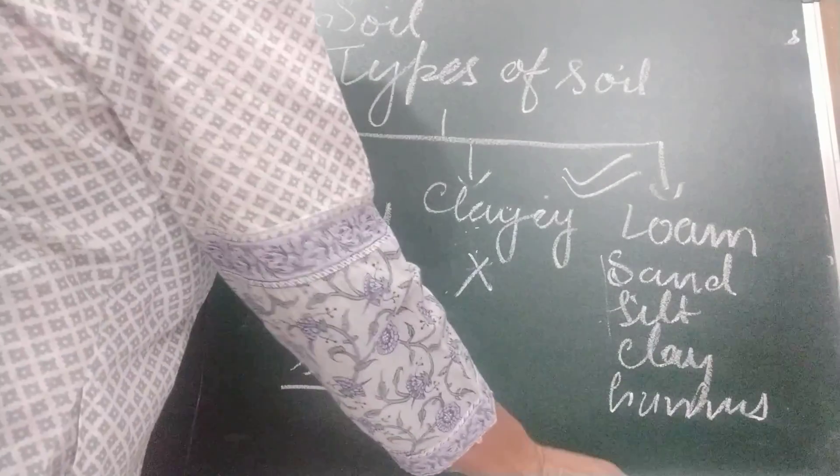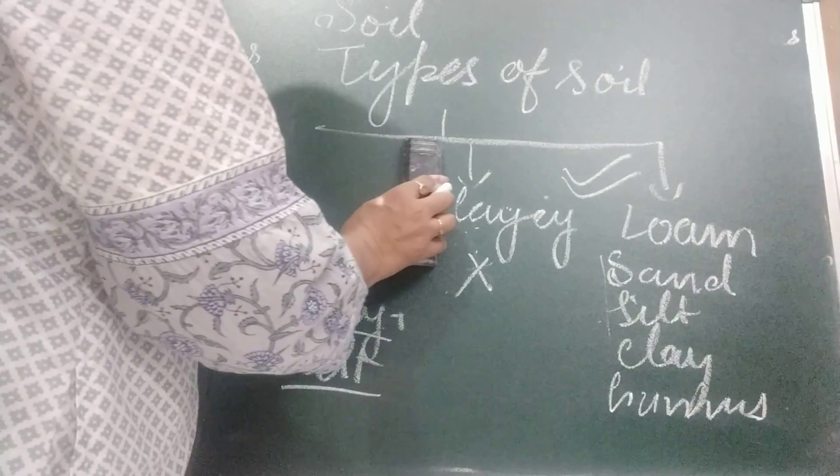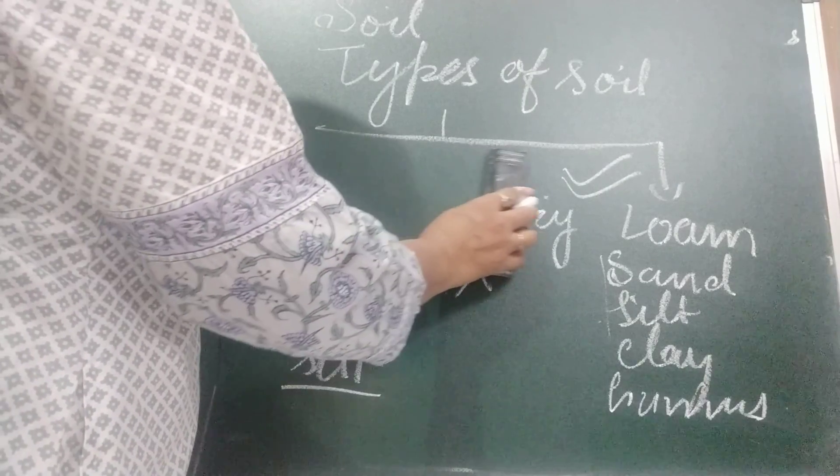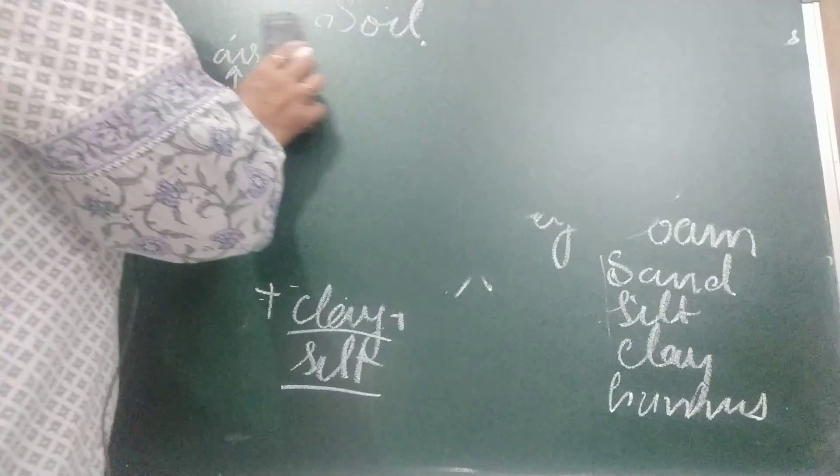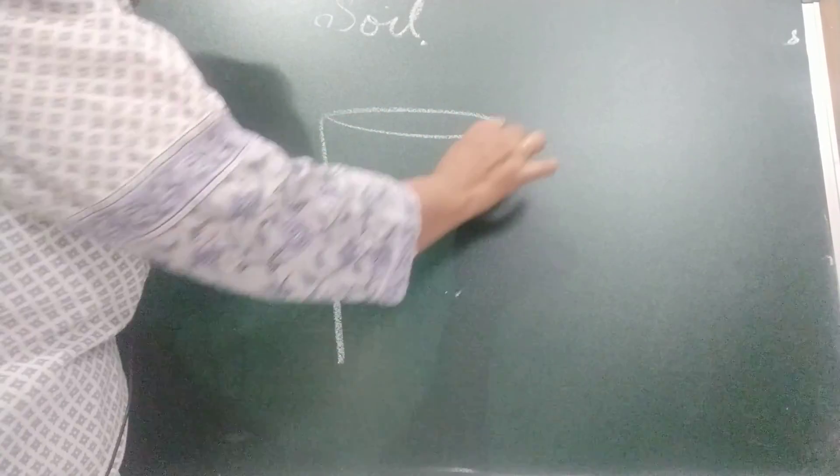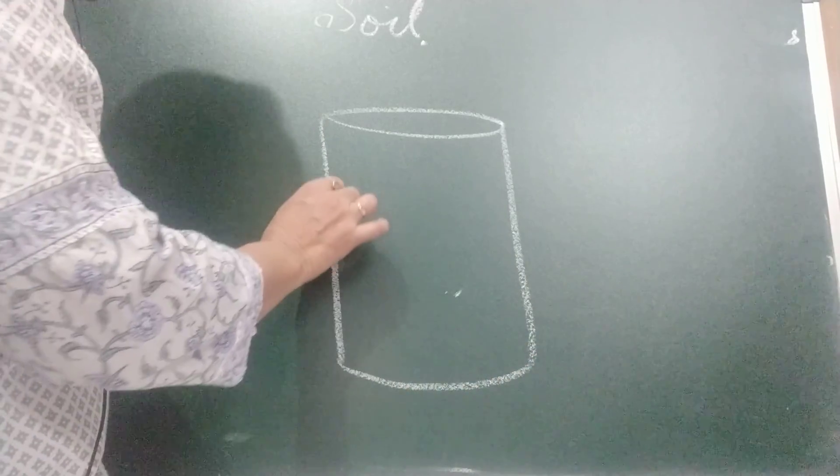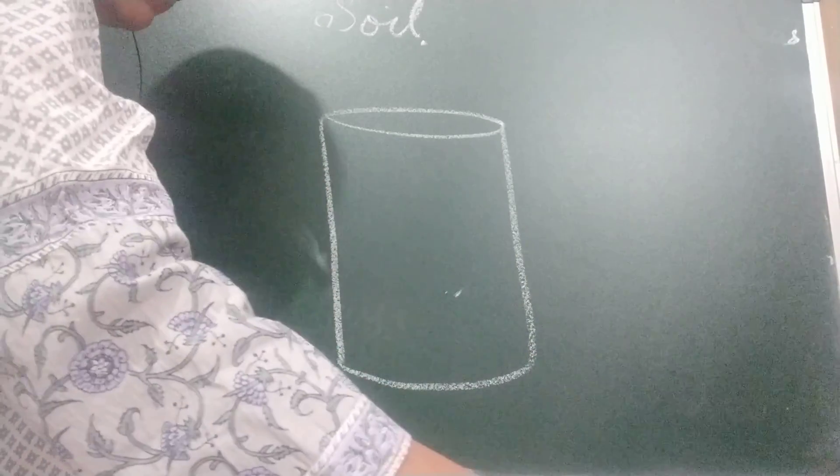Now, one activity I am going to discuss. This activity is going to tell us how to find out the proportion of different solid components in garden soil. What we will do? We will dig up a handful of garden soil and place it in a beaker. And add about 500 ml of water and shake the beaker for a little while. Now, allow the soil to settle down. What we will notice, just see first. See the diagram. This is beaker. We have taken soil and added water and allowed to settle down. We will find different layers have been formed.